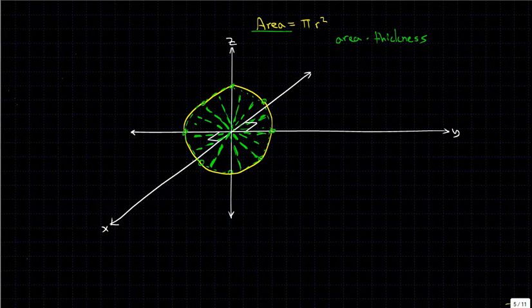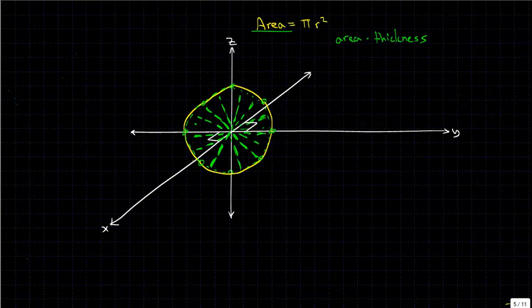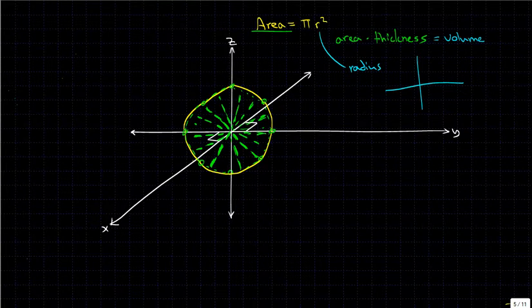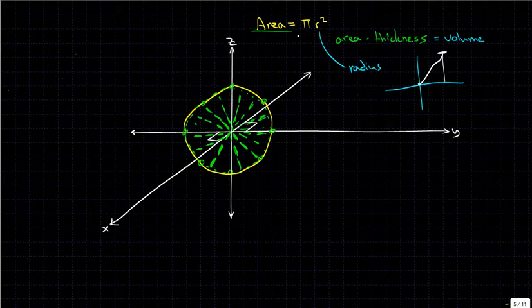If we continue this all around, we'll get essentially a circle. At any specific x-axis point, we get our area. And remember, it was area times thickness equals our volume. So the trick is, we just take pi times our radius squared. Let's think for a second, what is our radius? Well, back on our x and y curve, if we have a function that just goes up, then whatever that y value is, is going to be our radius. So we do pi times the radius squared, and then we have our area.